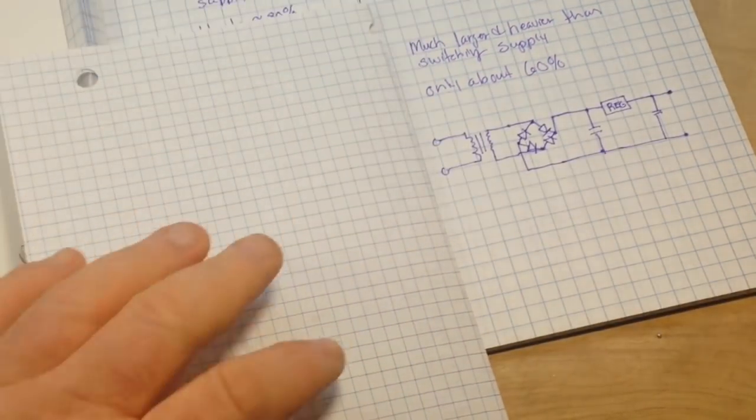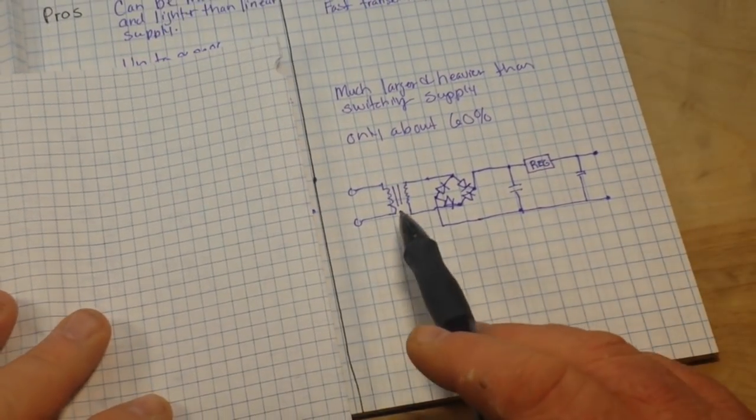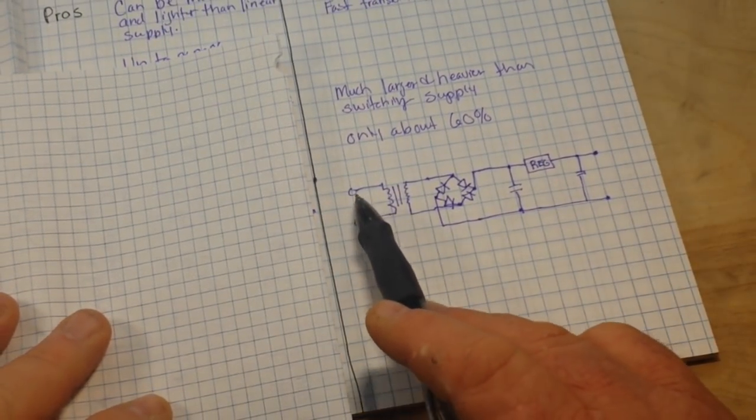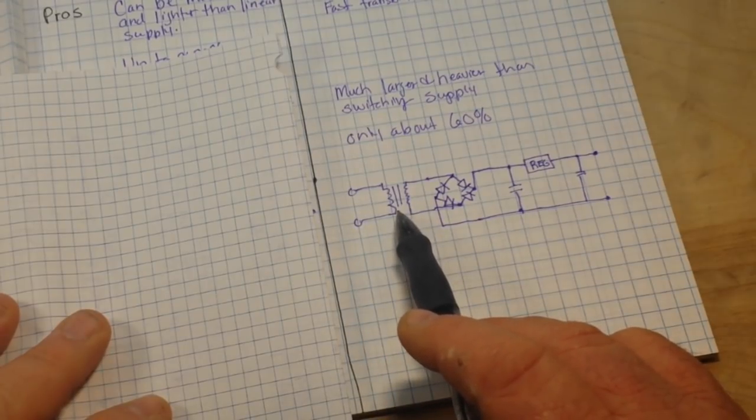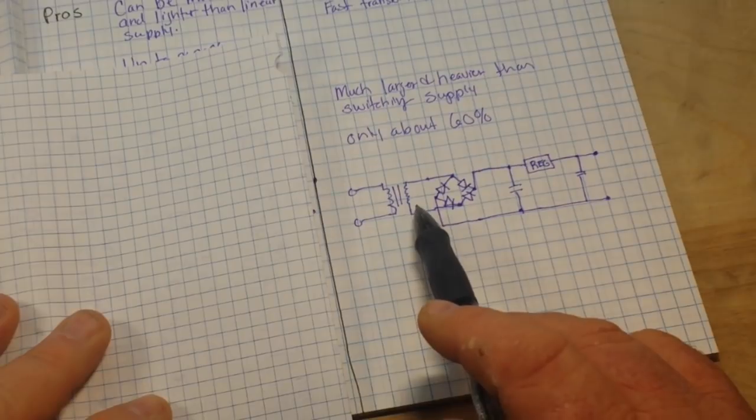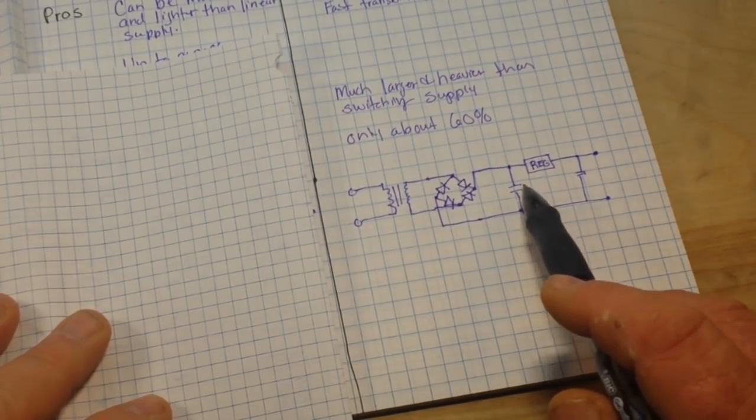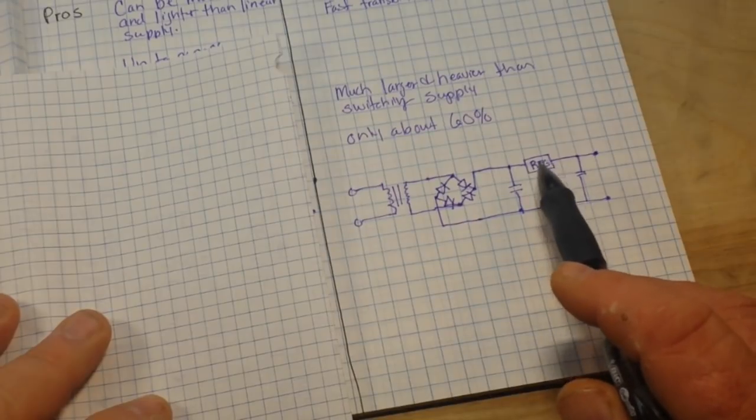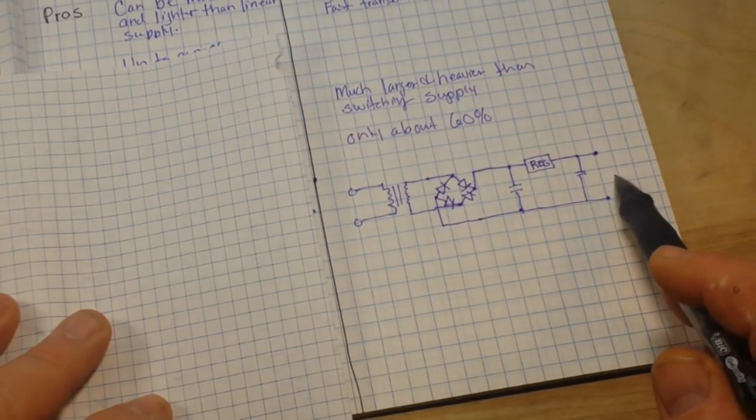Let's look at a simple circuit design for a linear power supply. Here's our AC coming in through our transformer. So now we have DC, which gets rectified, filtered. Then we go through our regulation circuitry to control our output voltage, filtered again, and output as a relatively clean DC.